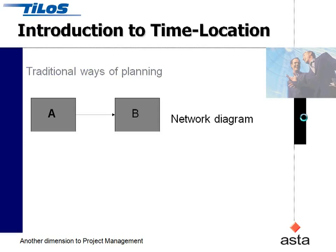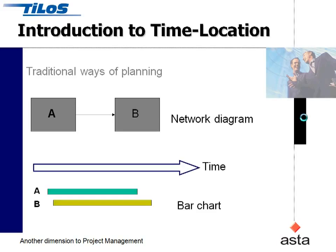With traditional planning, you make a network diagram and say that there are two activities that follow each other. But there's no information about time or any distance component. And that's traditionally been converted into a Gantt chart or a bar chart where you see the items against a common timeline.